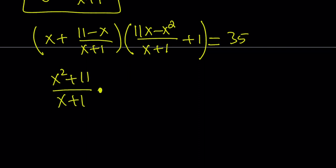x cancels out. You end up with x squared plus 11 over x plus 1. And that is multiplied by 11x plus x, which is 12x, minus x squared plus 1. And that is divided by x plus 1 as well. And this product is equal to 35.